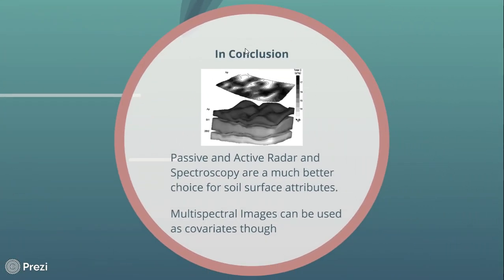In conclusion, passive and active radar and spectroscopy — which is cost-prohibitive — are much better choices for measuring soil surface attributes and some of the stuff that could potentially be below. Multispectral images do have a place in soil remote sensing, but mostly through the use of covariates in geographically weighted regression models and other environmental phenomena models.